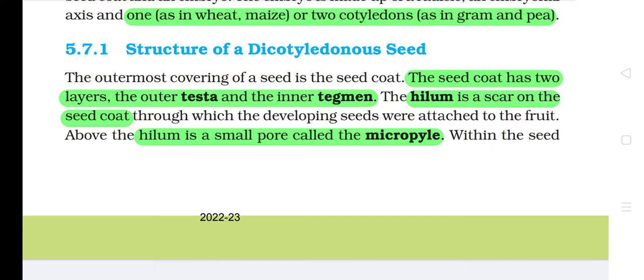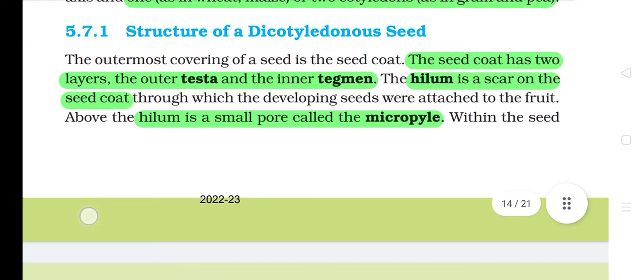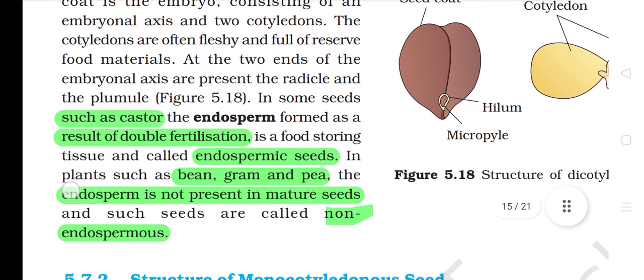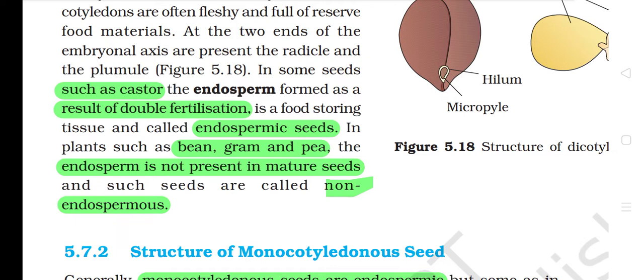The outermost covering of a seed is the seed coat. The seed coat has two layers: the outer testa and the inner tegmen. The hilum is a scar on the seed coat through which the developing seeds were attached to the fruit. Above the hilum is a small pore called the micropyle. Within the seed coat is the embryo, consisting of an embryonal axis and two cotyledons. The cotyledons are often fleshy and full of reserve food materials. At the two ends of the embryonal axis are present the radicle and the plumule. In some seeds such as castor, the endosperm formed as a result of double fertilization is a food-storing tissue — such seeds are called endospermic. In plants such as bean, gram and pea, the endosperm is not present in mature seeds and such seeds are called non-endospermic.